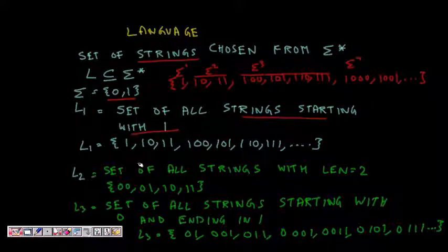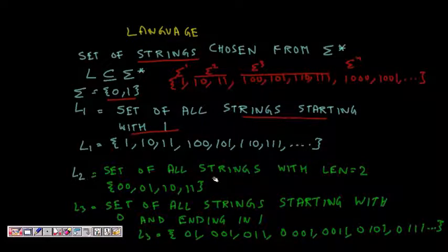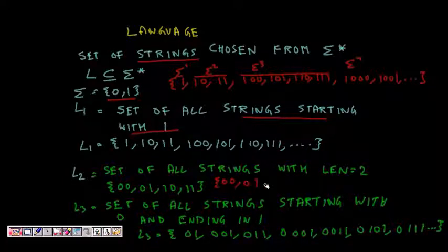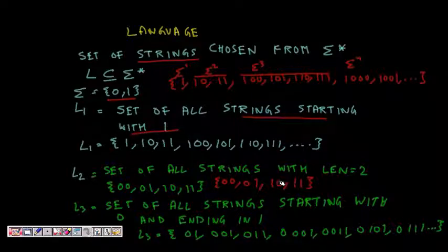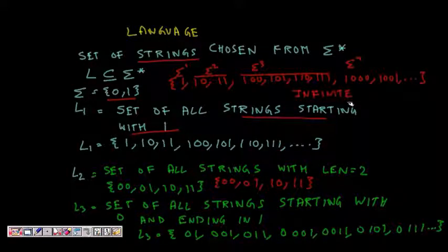Another language, L2, over alphabet {0,1} is the set of all strings of length two: {00, 01, 10, 11}. This is a finite language with a finite number of elements.